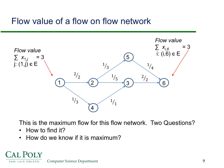In an earlier screencast we were looking at a particular example of a flow network with the flow on it. Here's the simple flow network we were talking about. The second number represents the capacity of an edge, the top number represents the amount of flow on the edge. The amount of flow out of the source is two plus one, which is three, equal to the flow into the sink, which is one plus two, also three. I claimed that this is the maximum flow for this network, and there are two questions: how to find it and how do we know it's maximum.